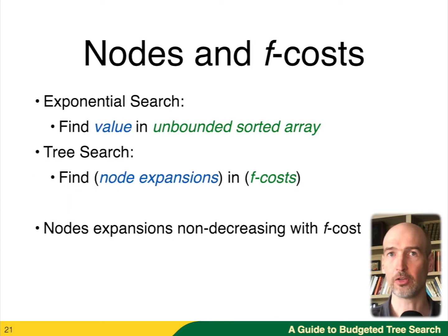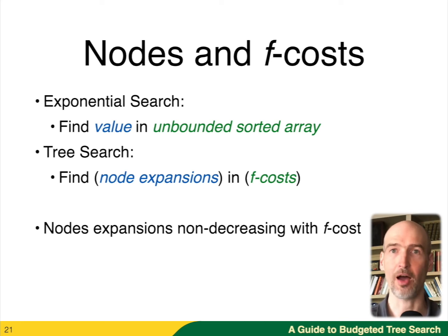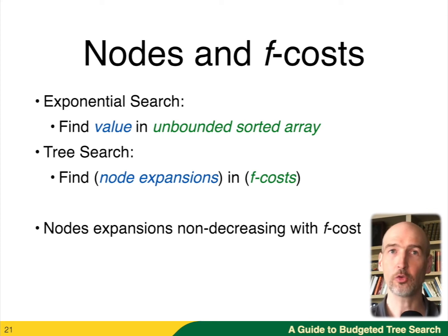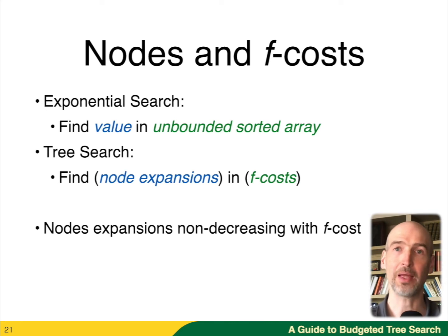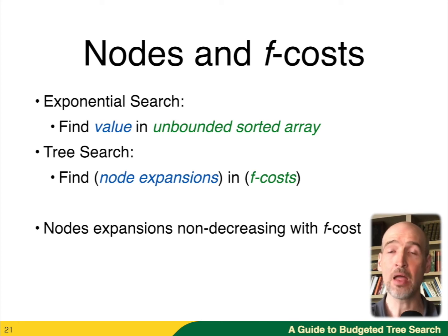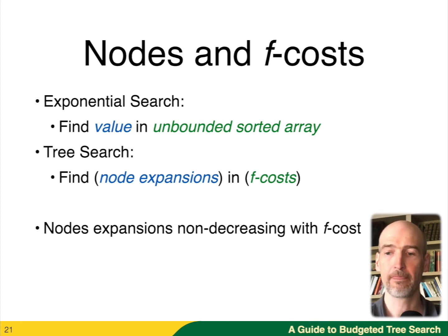There's an equivalency between this exponential search algorithm and our F cost search. F costs are going to be our unbounded sorted array of all possible F costs. The values we're going to store are the number of node expansions performed for each F cost. We don't know for a particular F cost how many nodes are expanded, but we can run a bounded depth-first search to find out. The important thing is that node expansions, as the F cost increases, are also non-decreasing.